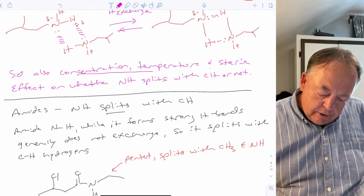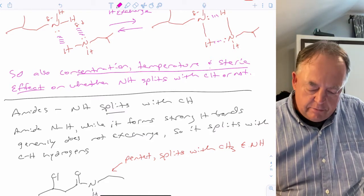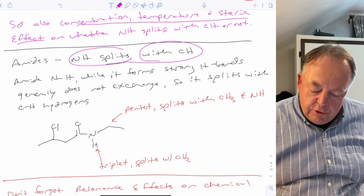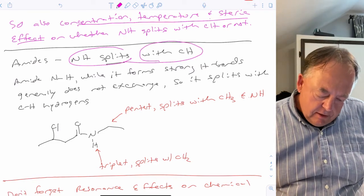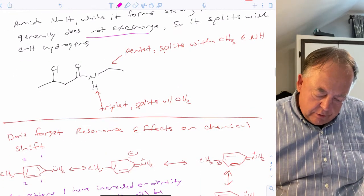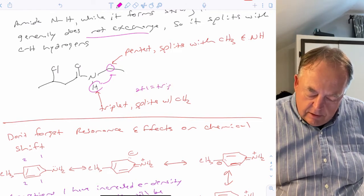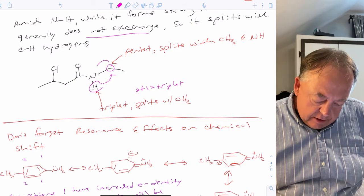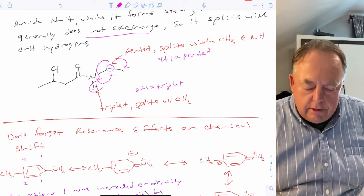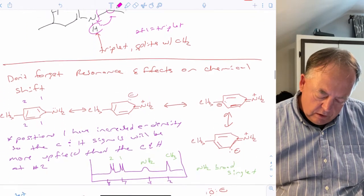Amines are also concentration-, temperature-, and steric-dependent in the same way. However, NH hydrogens on amides typically do split with hydrogens on carbon. Even though the amide NH can form strong hydrogen bonds, it generally does not undergo rapid exchange. So for an amide NH with two carbon neighbors, it would split into a triplet, and the adjacent CH2 would be a pentet.